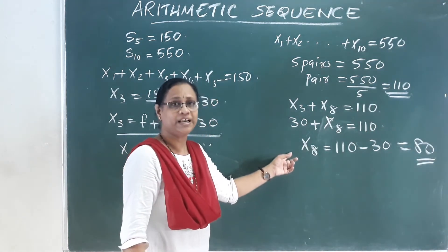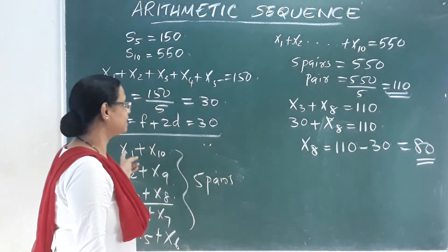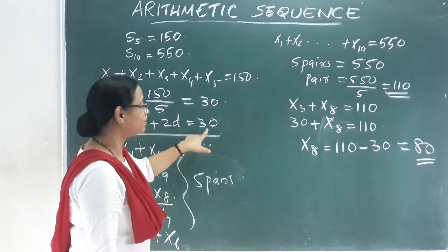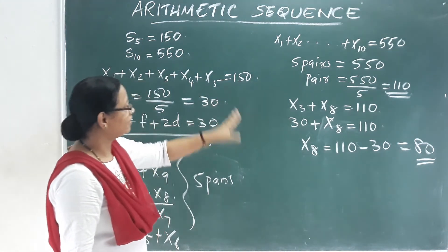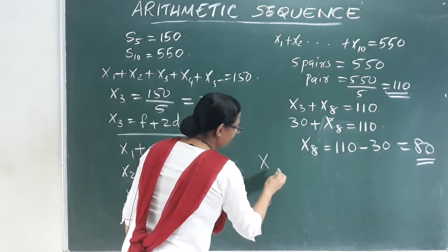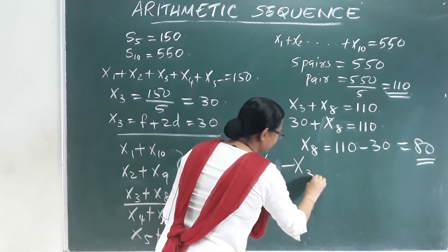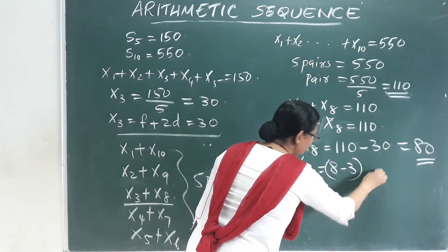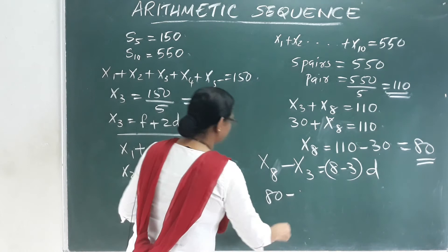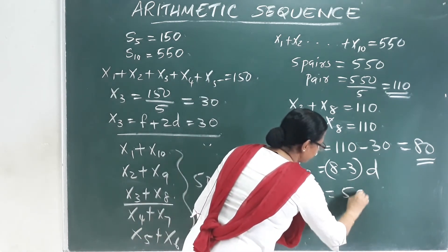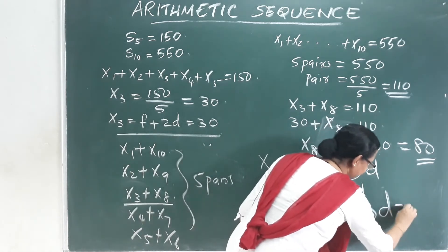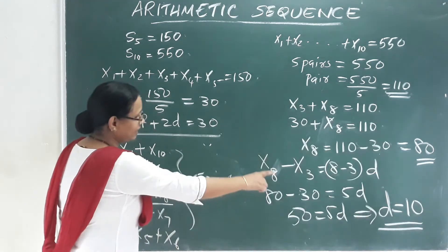Now for the first three terms, we need to find f and d. Using x8 minus x3 equals (8 minus 3) times d: 80 minus 30 equals 5d, so 50 equals 5d, which means d equals 10.